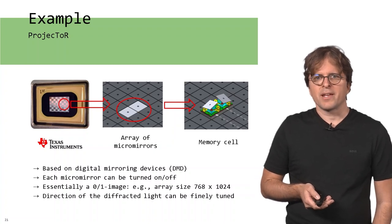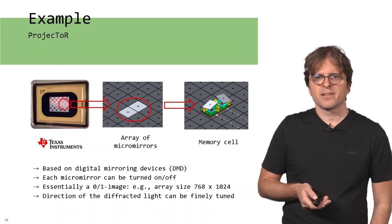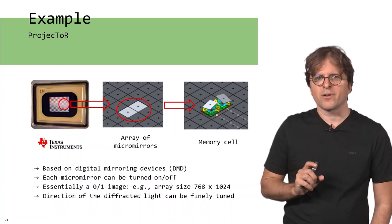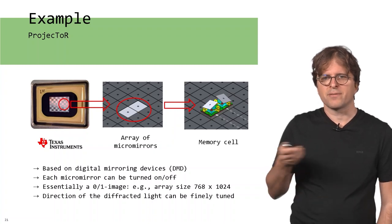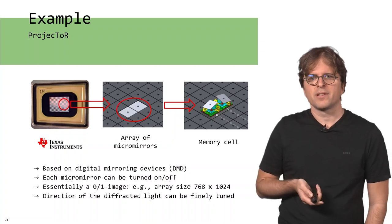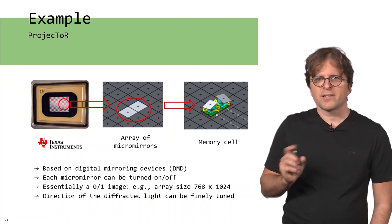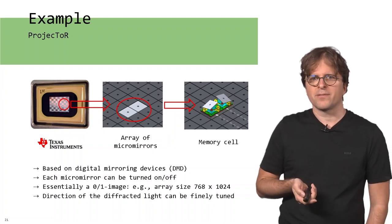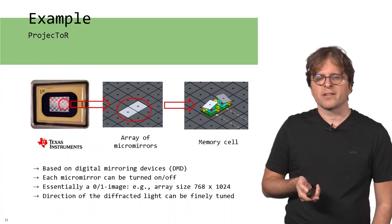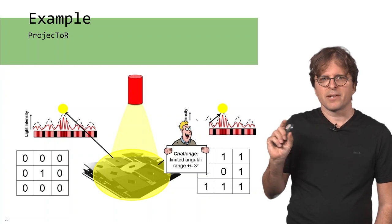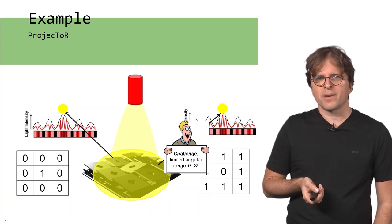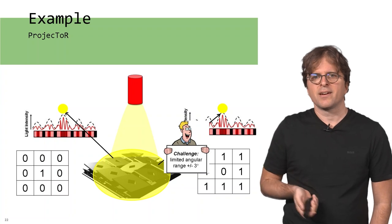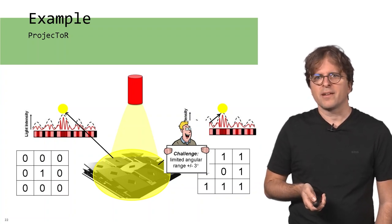There's another very interesting technology called Projector. That's based on digital mirroring devices, DMDs, where each micro mirror can be turned on and off programmatically. You can see this as a 0-1 binary image. The array size here is something like 1,000 by 1,000 bits. By changing this on and off pattern, you can influence the direction of the diffracted light and accordingly change the interconnect. For example, if you have a bitmap like this on the left, then the light will be distributed accordingly in this way. If you change the bitmap according to the right figure, you can see a different distribution and you can very quickly change between these light propagations.